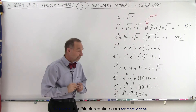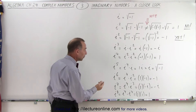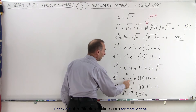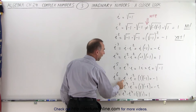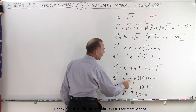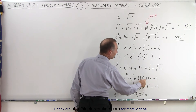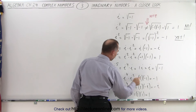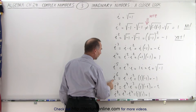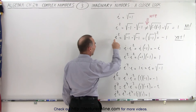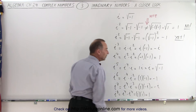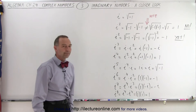i to the sixth can be written as i to the fourth times i squared. i to the fourth is 1 and i squared is negative 1, so that equals negative 1. i to the sixth is the same as i squared, equal to negative 1.